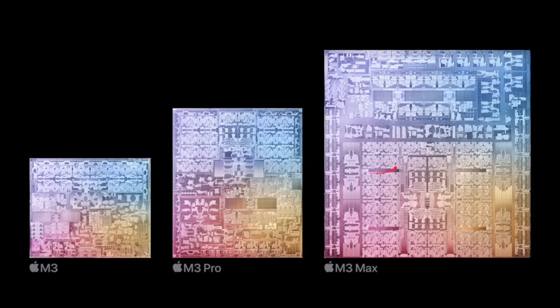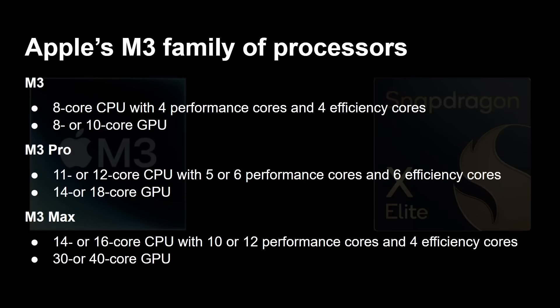Apple has a range — there could even be an M3 Ultra which we don't know about yet. They basically grow in size, in the number of CPU and GPU cores, and in transistors as they scale up. The standard M3 is an octa-core processor with four performance cores and four efficiency cores, and an eight or ten-core GPU. The Pro has 11 or 12 CPU cores and 14 or 18 GPU cores. The Max goes to 14 or 16 CPU cores and 30 or 40 GPU cores, each with different combinations of performance and efficiency cores. The Snapdragon X Elite, by contrast, is currently just one processor.